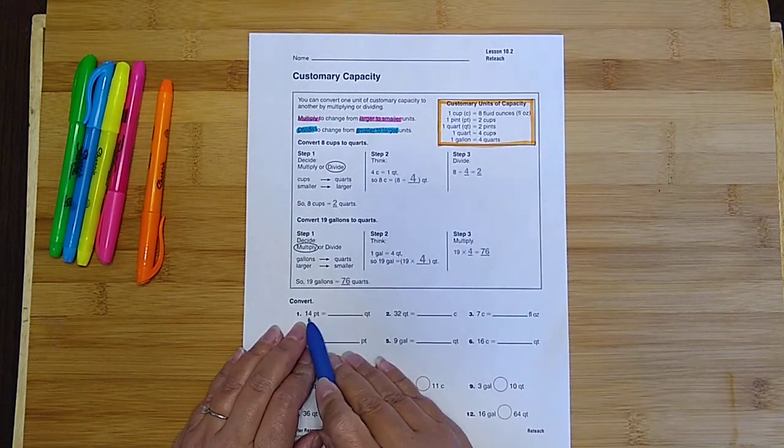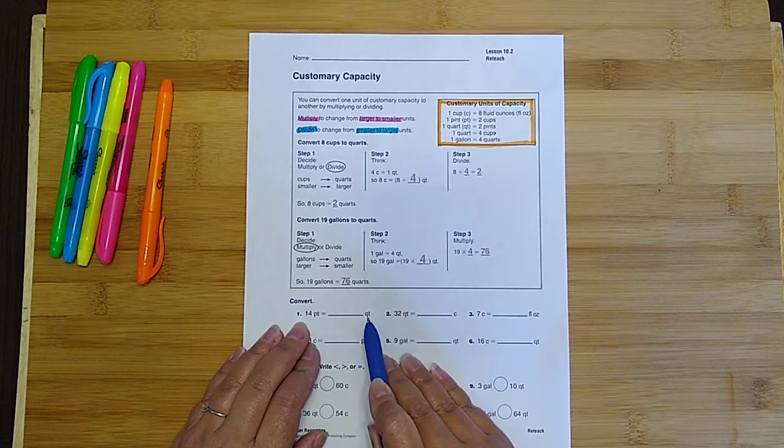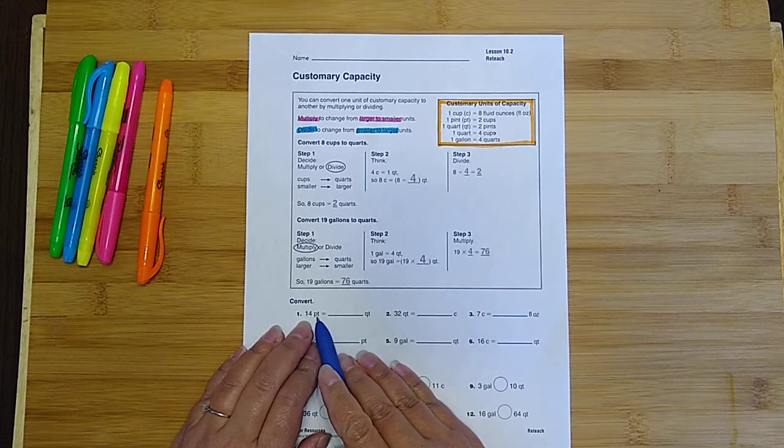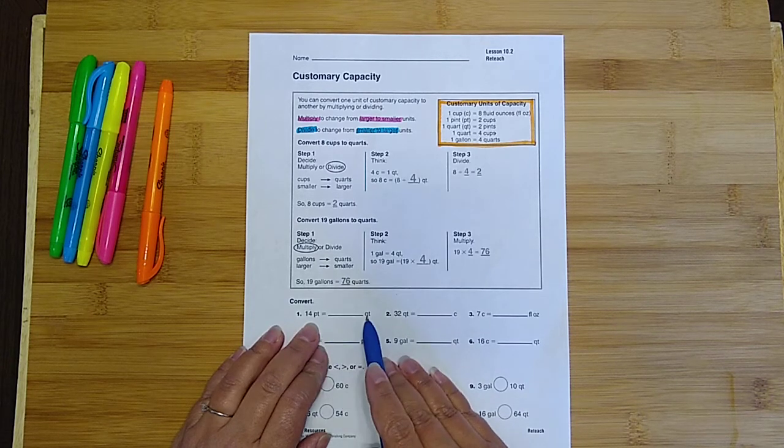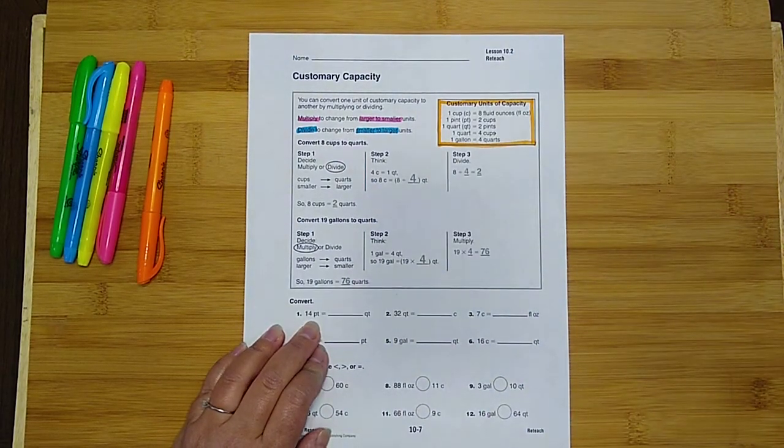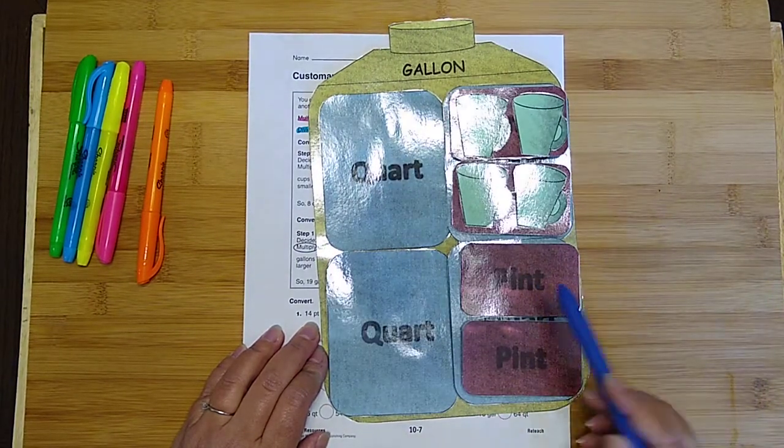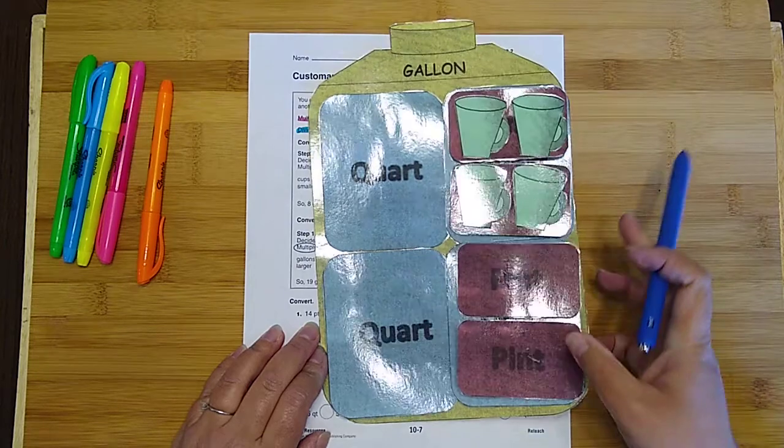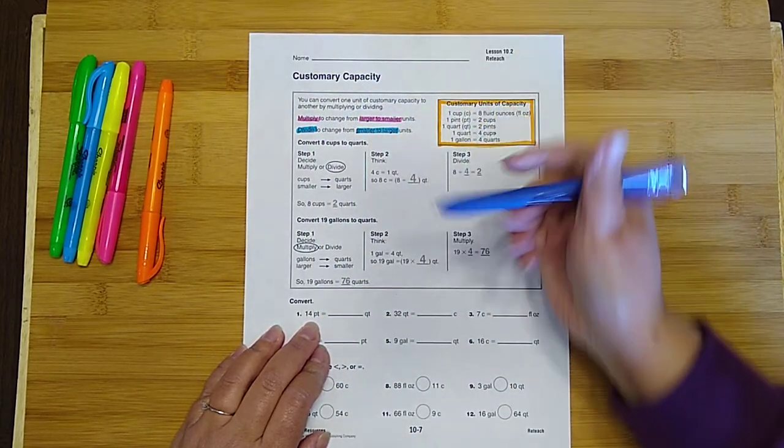On number one, it says 14 pints equals blank quarts. Well, we've got to figure out, are we going larger to smaller or smaller to larger? Pints to quarts. I'm going to glance again at our picture. Here's my pint. Here's my quart. Pints are smaller than quarts, so I'm going from smaller to larger, which means I want to divide.